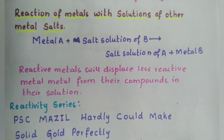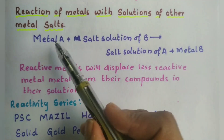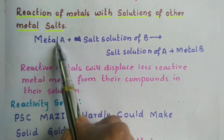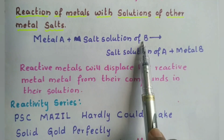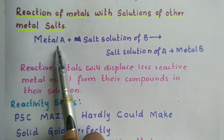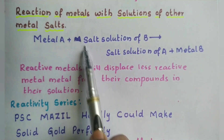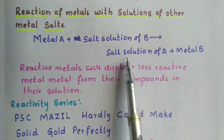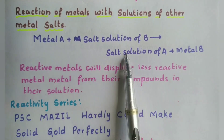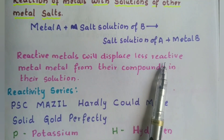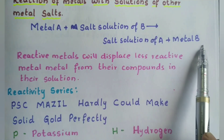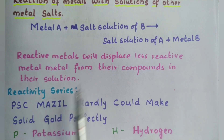Next we discuss the reaction of metals with solutions of other metal salts. Let us take a solution of metal B — so here the metal in solution is B and the metal added is A. If metal A is more reactive than metal B, a displacement reaction takes place. Metal A, being more reactive, displaces metal B from its salt compound, forming a salt solution of A while metal B is separated out. Reactive metals displace less reactive metals. Metal B, being least reactive compared to metal A, gets displaced. To know which metal is more or less reactive, you have to understand the reactivity series.